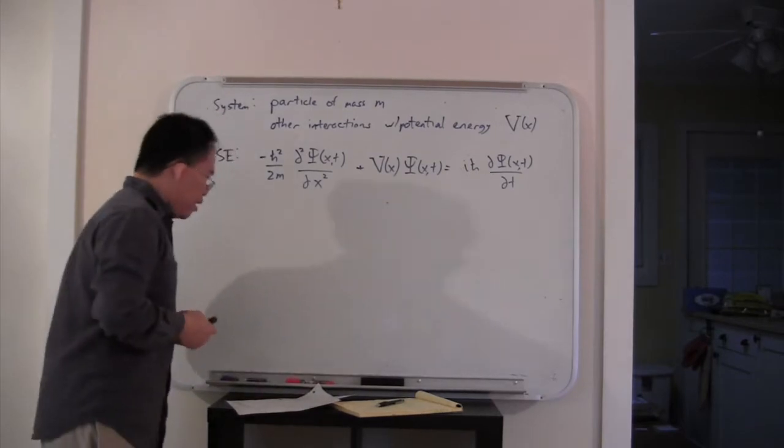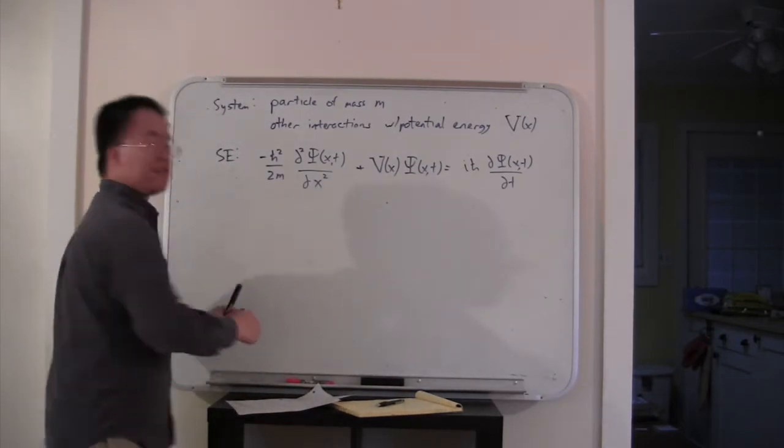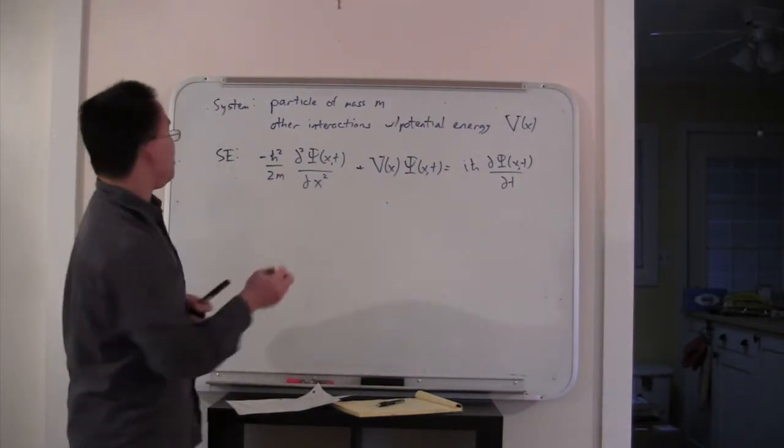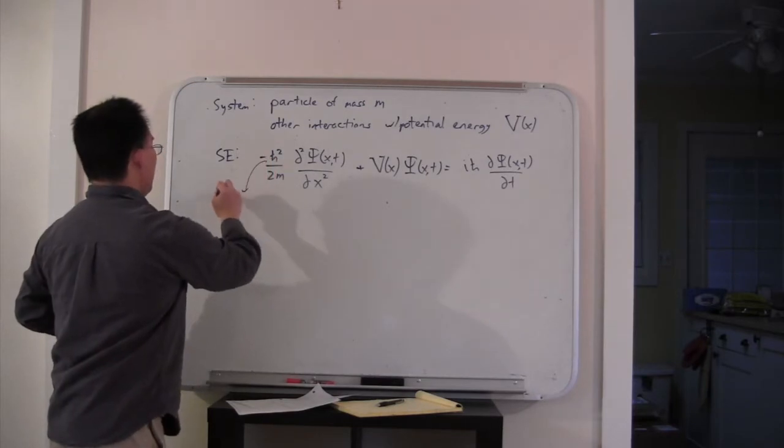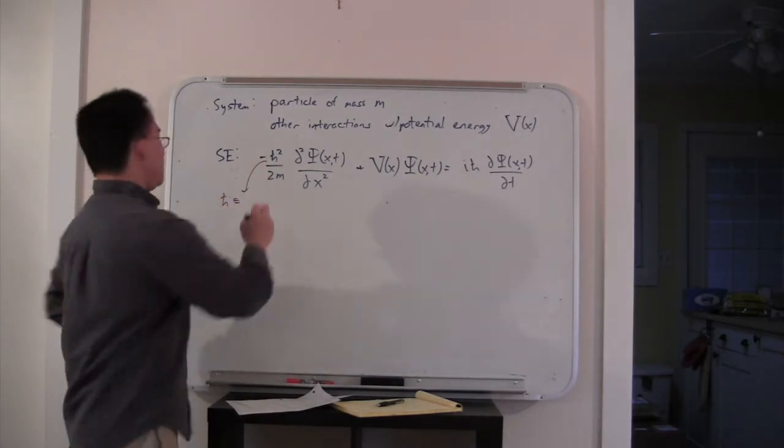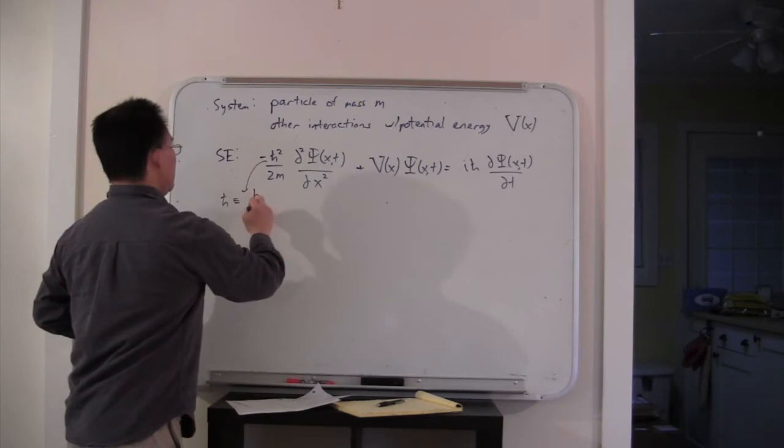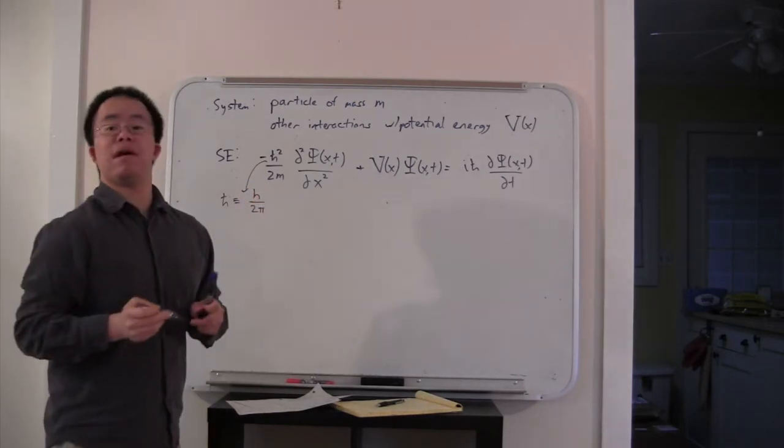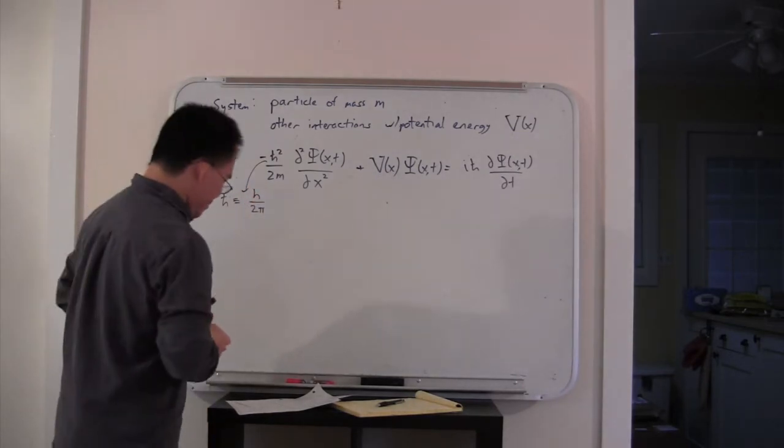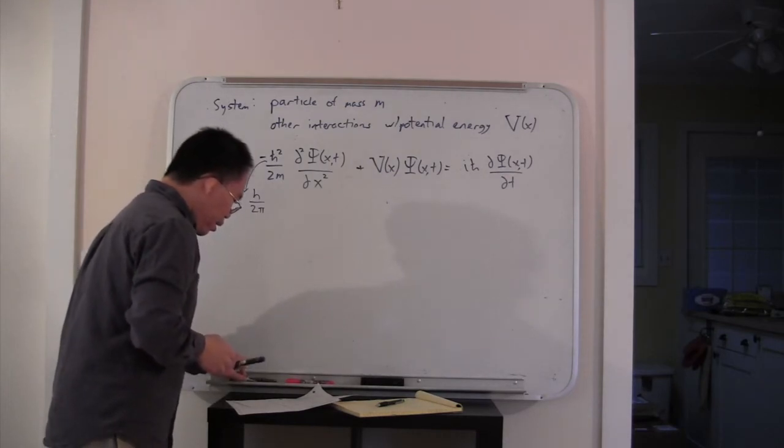As I said a couple of classes ago, I haven't tried to justify this. Ultimately, the justification comes from agreement with experiment. The h-bar here simply means Planck's constant h divided by 2 pi.